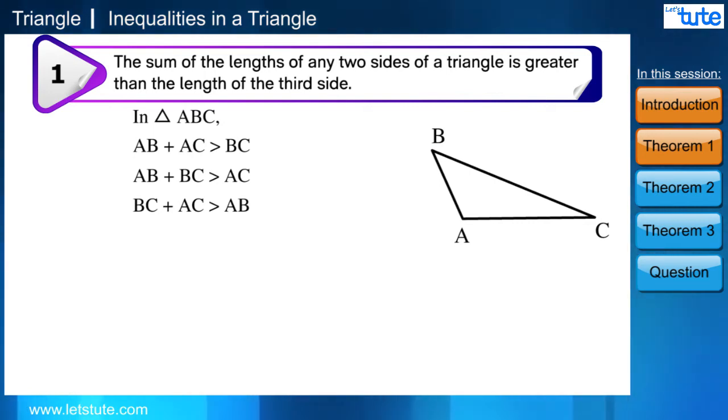If we extend the side CB to point B' and join A to B'. Now here you can observe that when we increase the length of side BC, then the measure of angle A is also getting increased. So now here, the longest side is B'C and the largest angle is A.